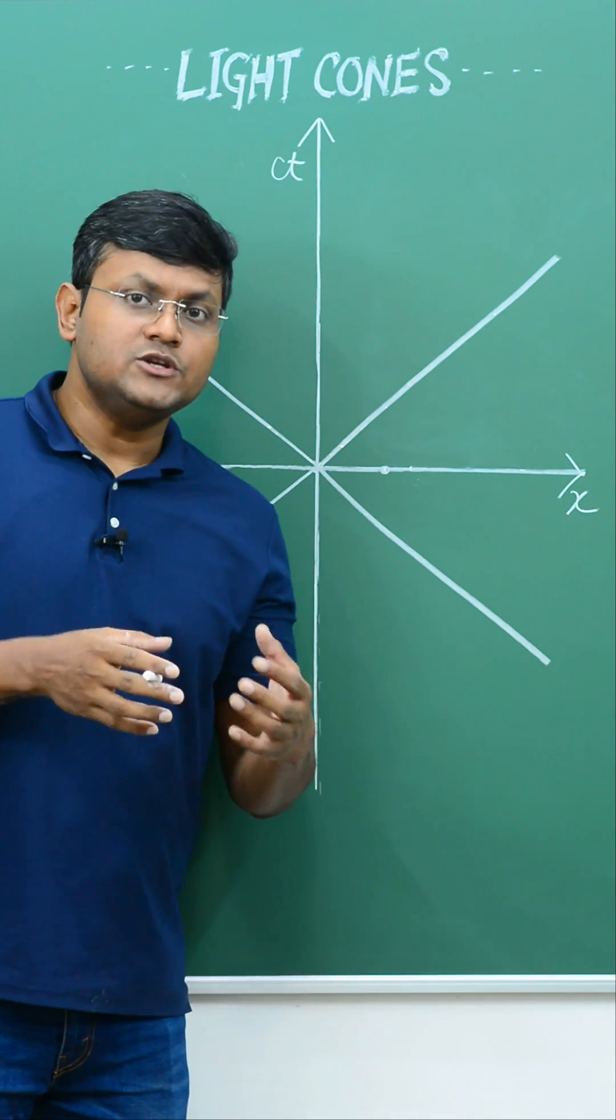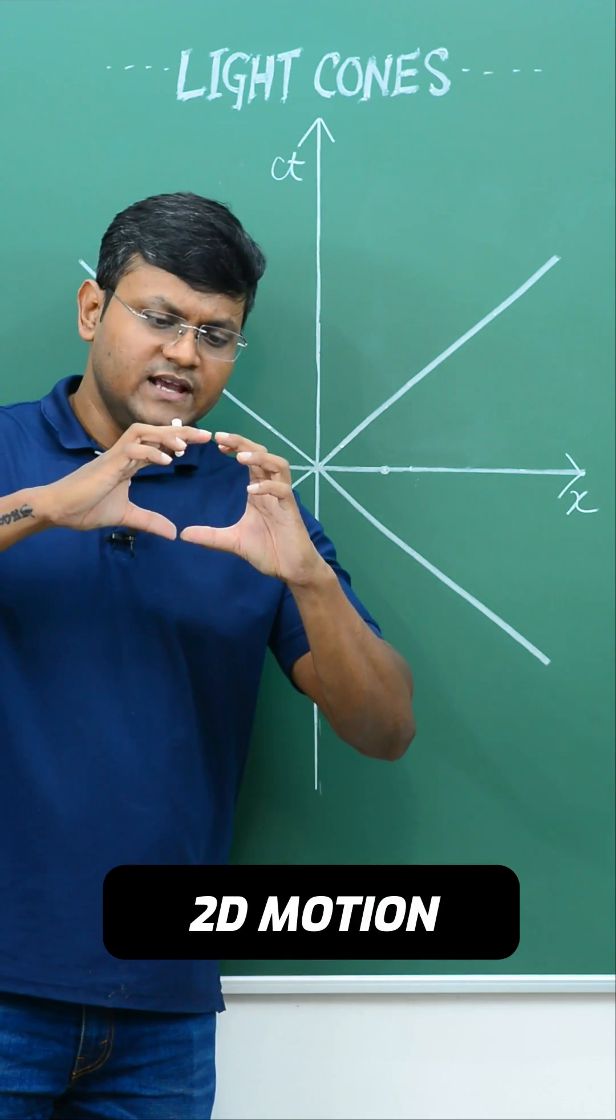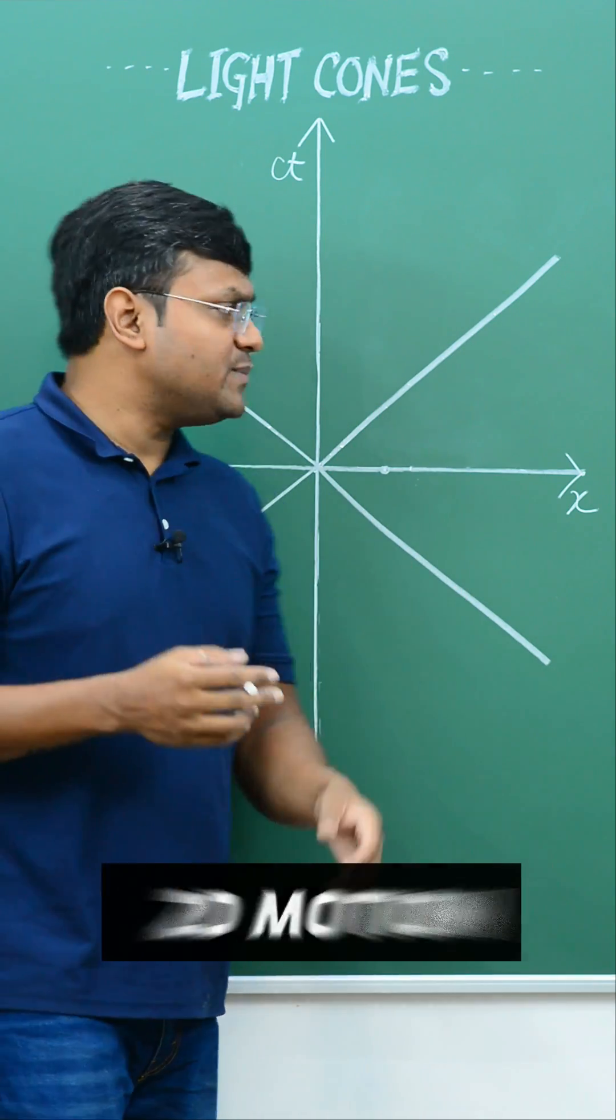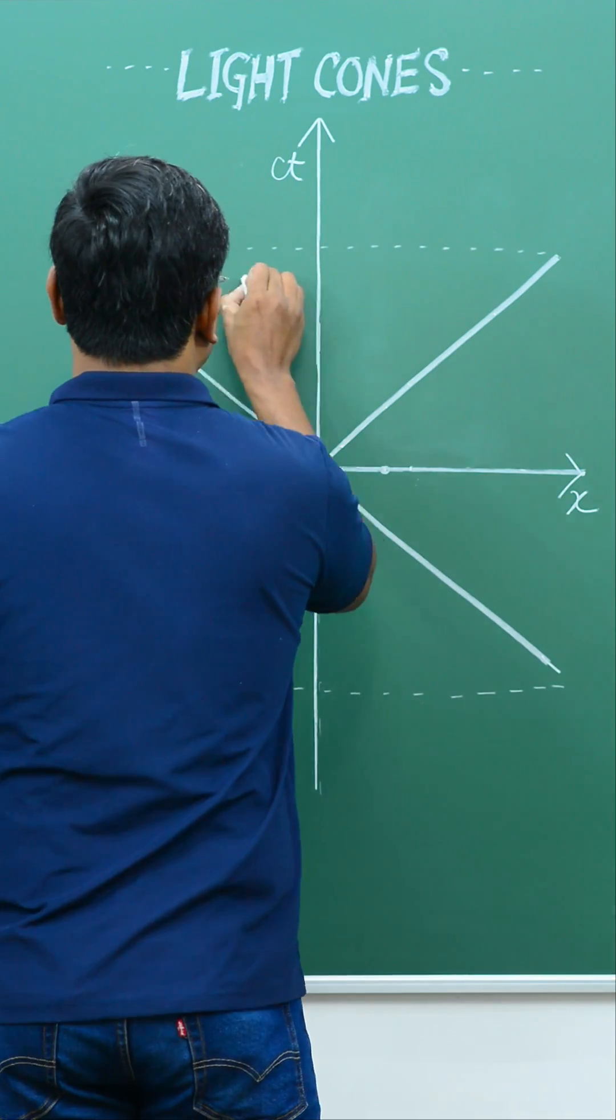We can extend this argument to two-dimensional motion where a light wavefront spreads out as a circle in the x-y plane, which in the space-time diagram is represented by what is known as a light cone.